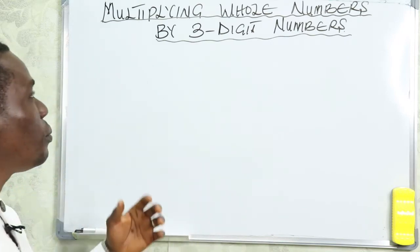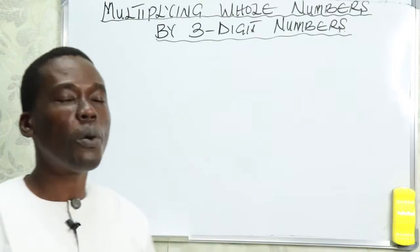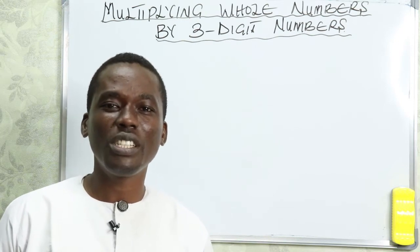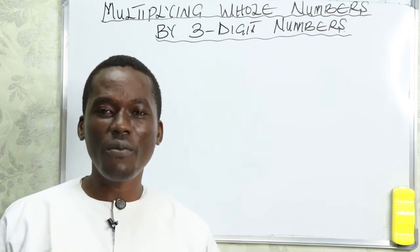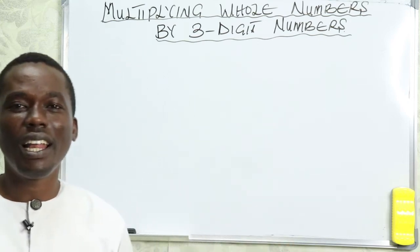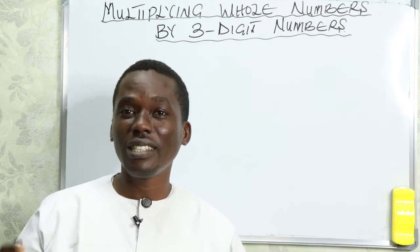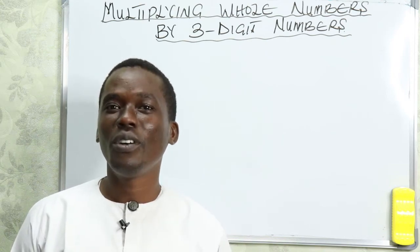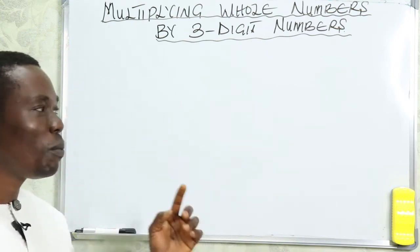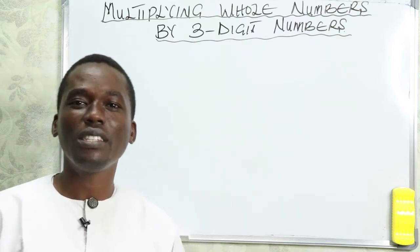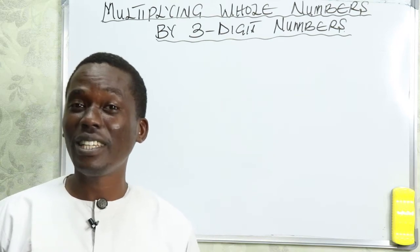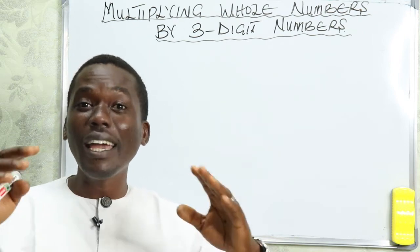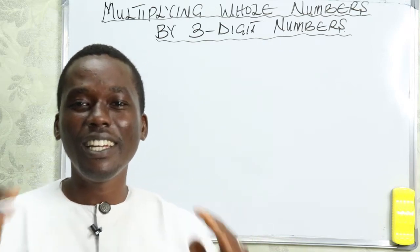Today we're going to look at the multiplication of whole numbers by three-digit numbers. It's much the same as we did for two-digit numbers, but we're going to consider three very important steps. If you've subscribed to my channel, thanks so much for watching. If you have not subscribed, I want you to hit the subscribe button now. As a pupil, this video is going to put you ahead of your peers in school regarding mathematics.